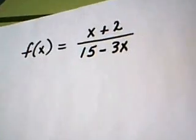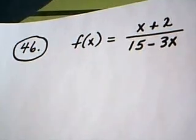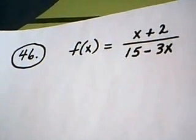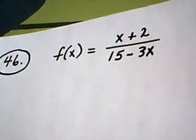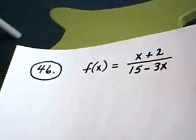So come with me to the paper. Let's go down to the paper and let's look at our function. We have the rational function f of x is equal to x plus 2 on the top, 15 minus 3x on the bottom.